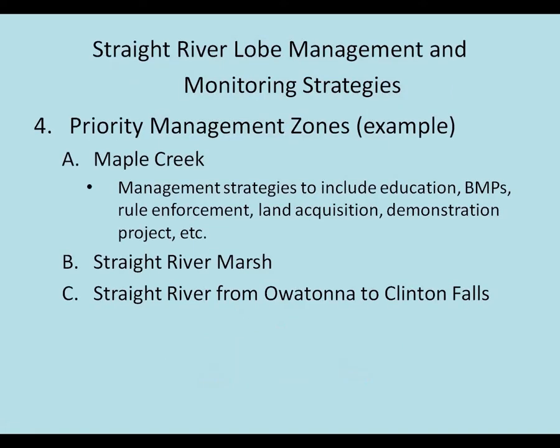Based on that, for each lobe we limited it to five priority areas because we wanted actual true priorities and not just a list of a hundred things. We knew this was meant to be a short-term plan for about three to five years because our intensive watershed monitoring was still being done, and we knew there were going to be some changes coming. So we chose that as kind of an arbitrary number. These are a couple of the priorities for the Straight River watershed.